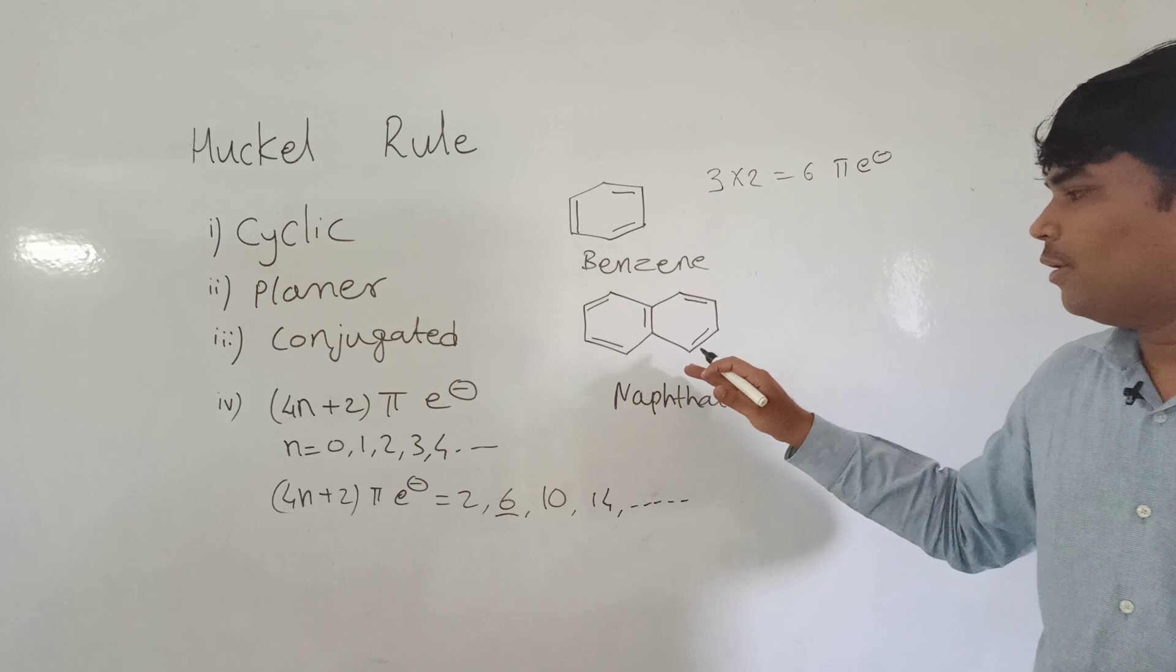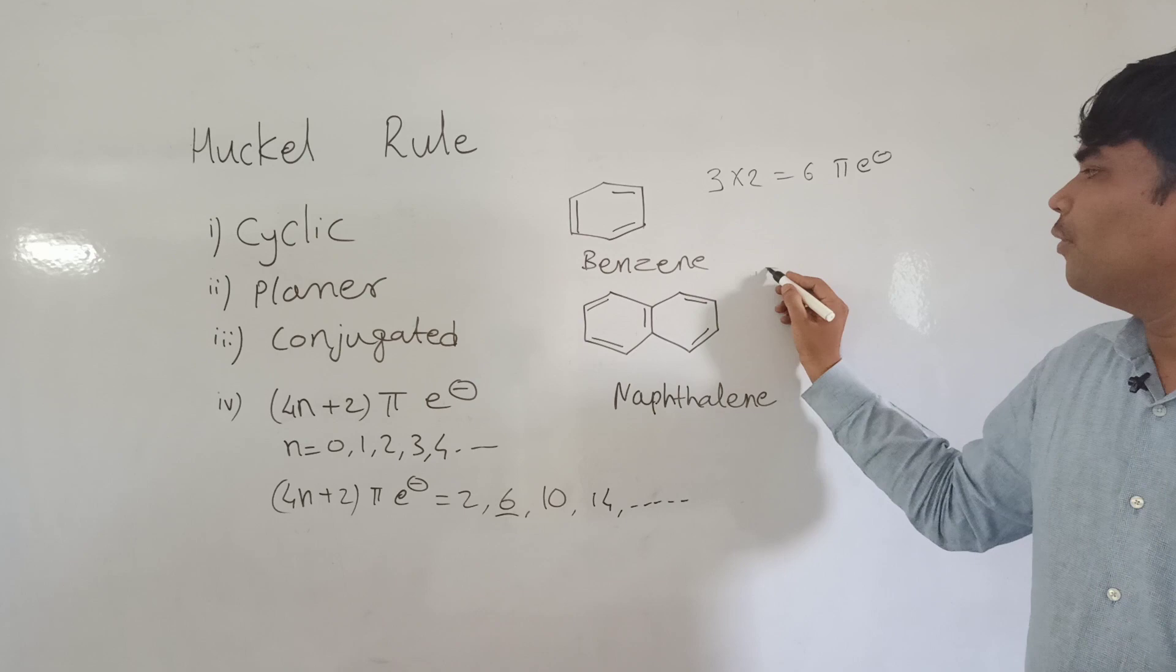In naphthalene, the double bonds are one, two, three, four, five. Five into two equals ten. It is cyclic, planar, conjugated, and contains ten pi electrons. Therefore, naphthalene is also aromatic.